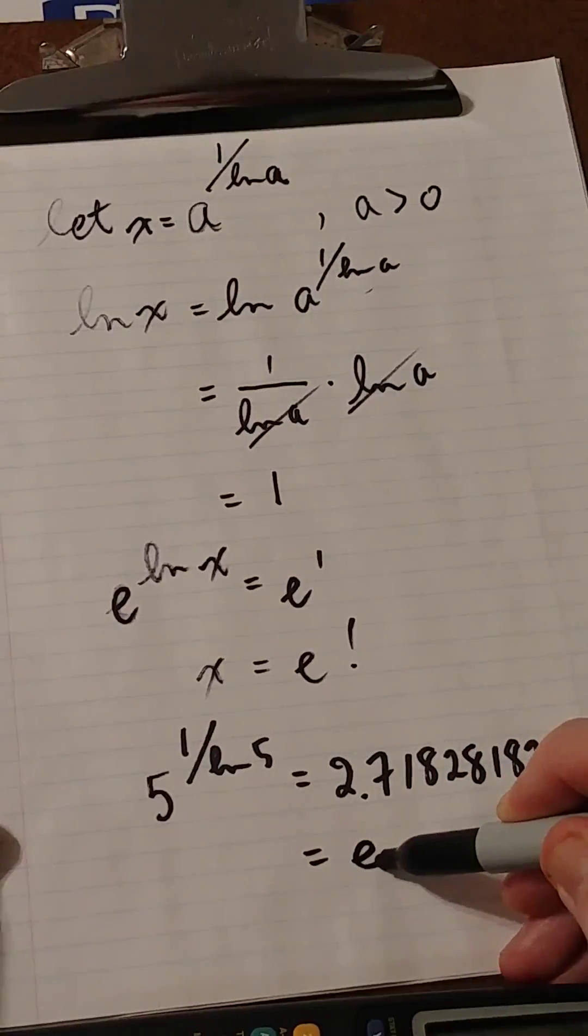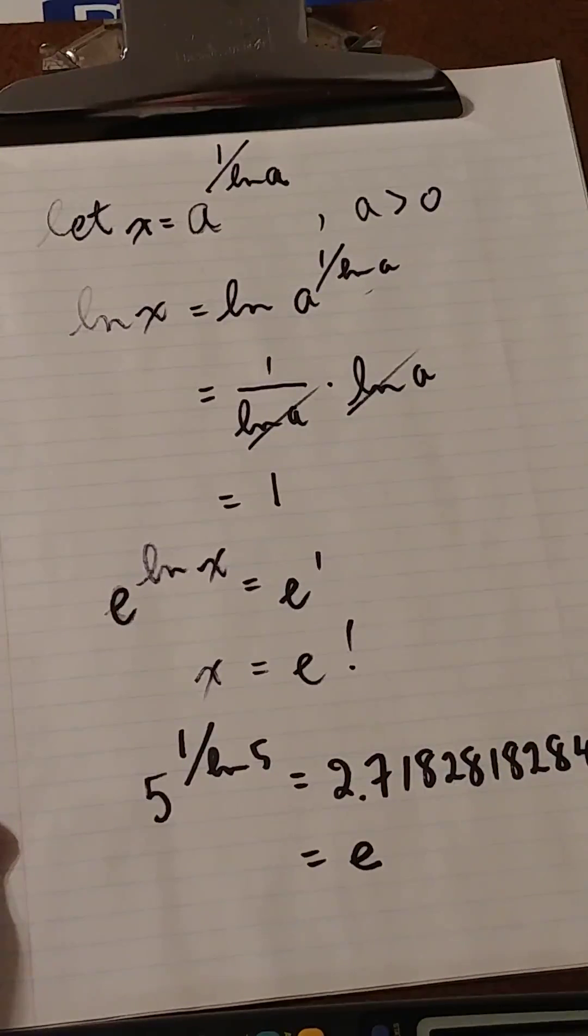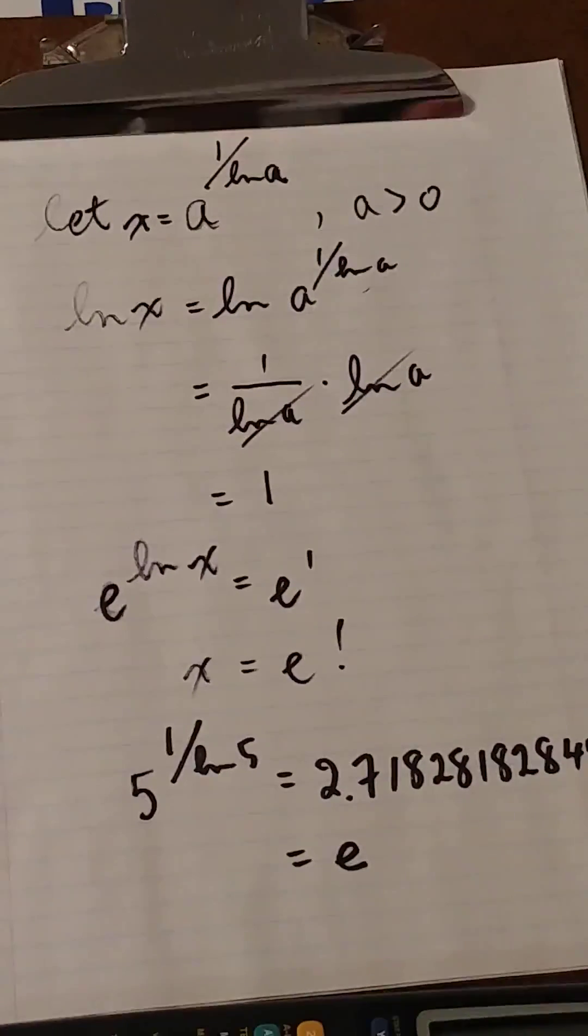It's called Euler's number, represented by the letter e. Unbelievable. Thank you very much for watching.